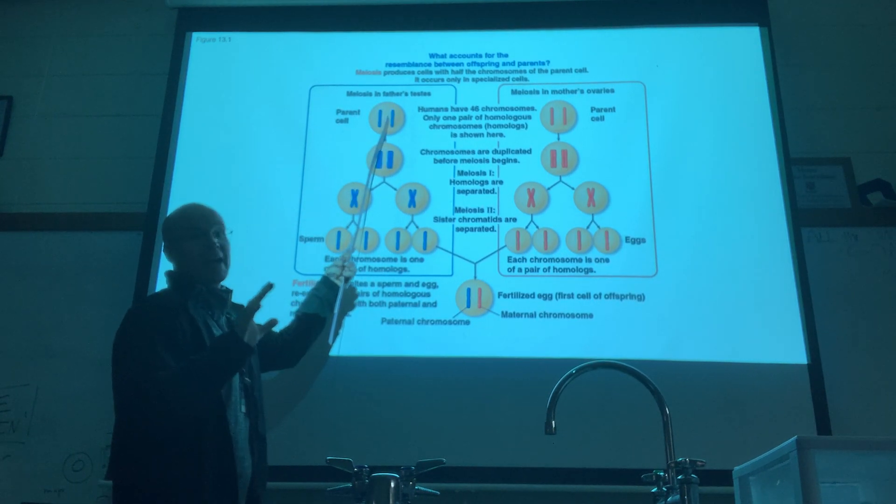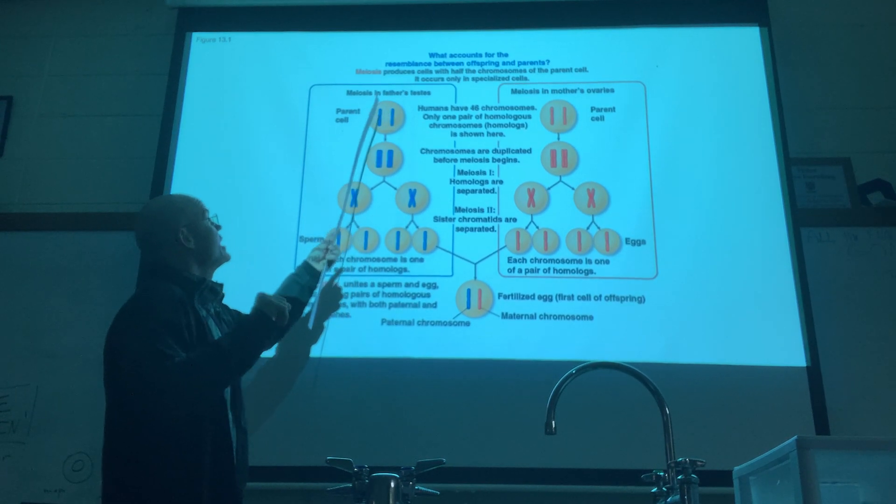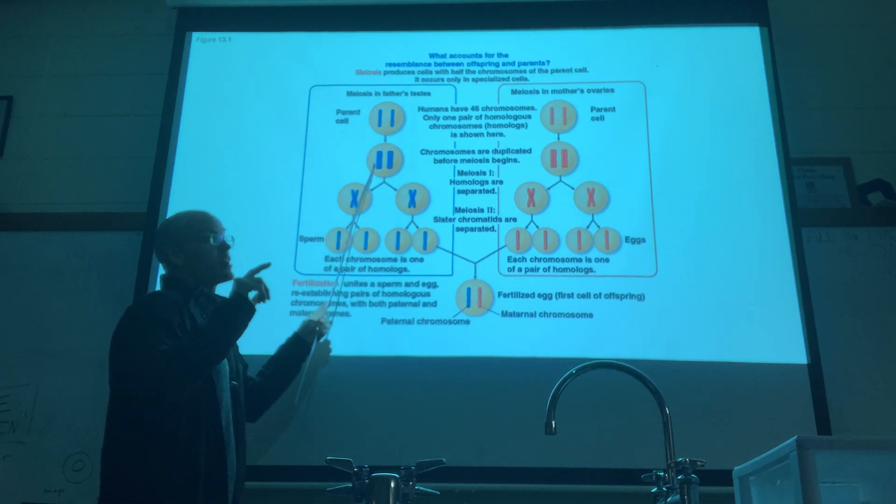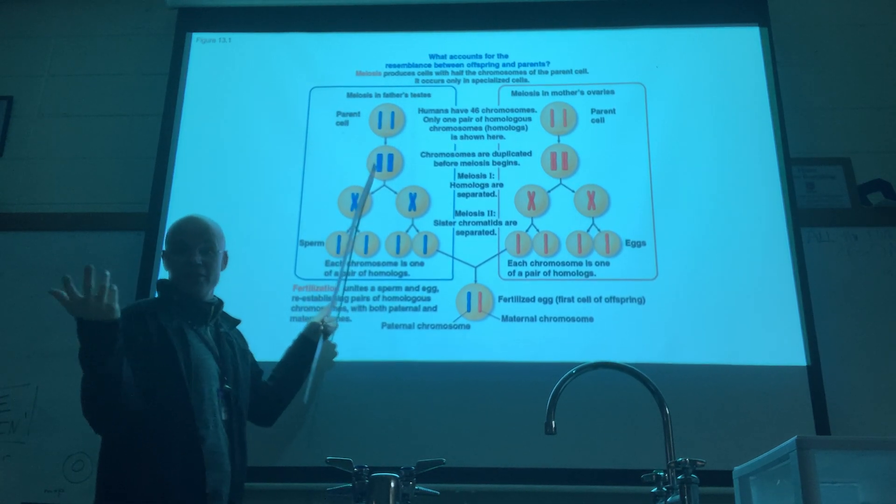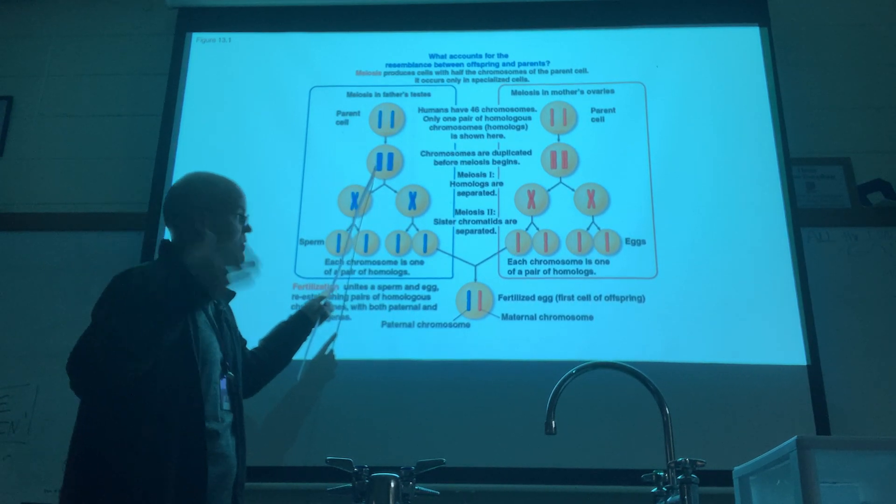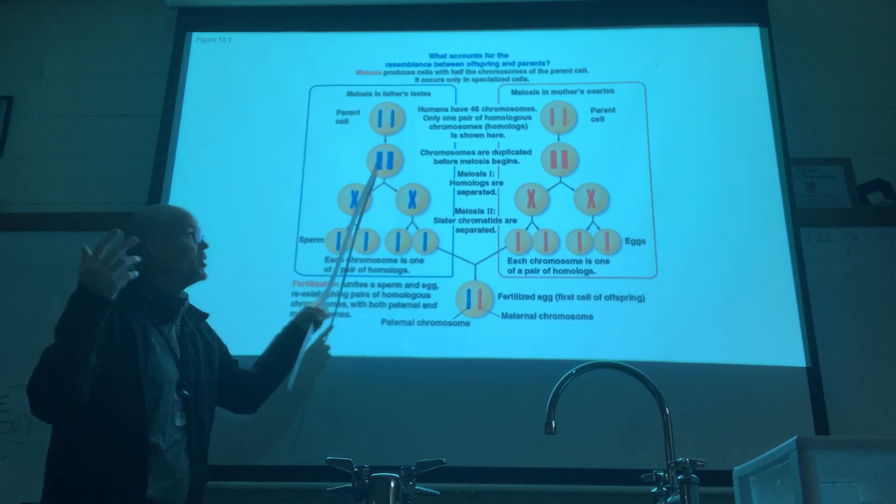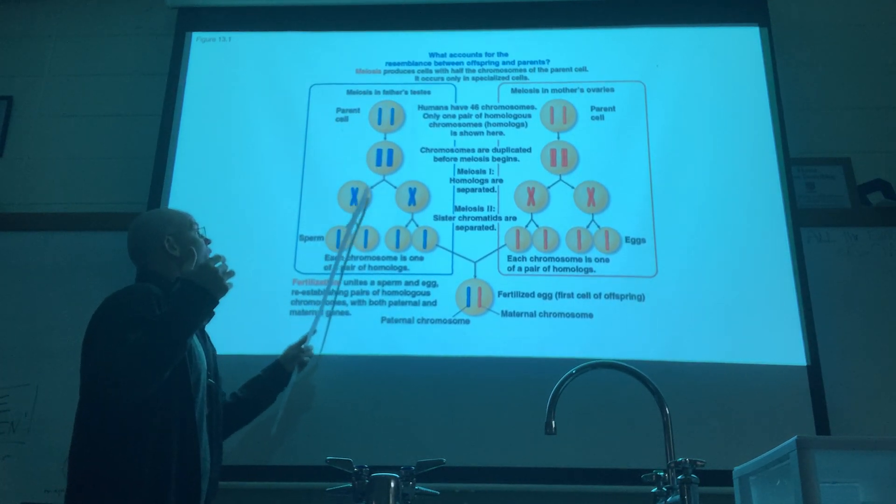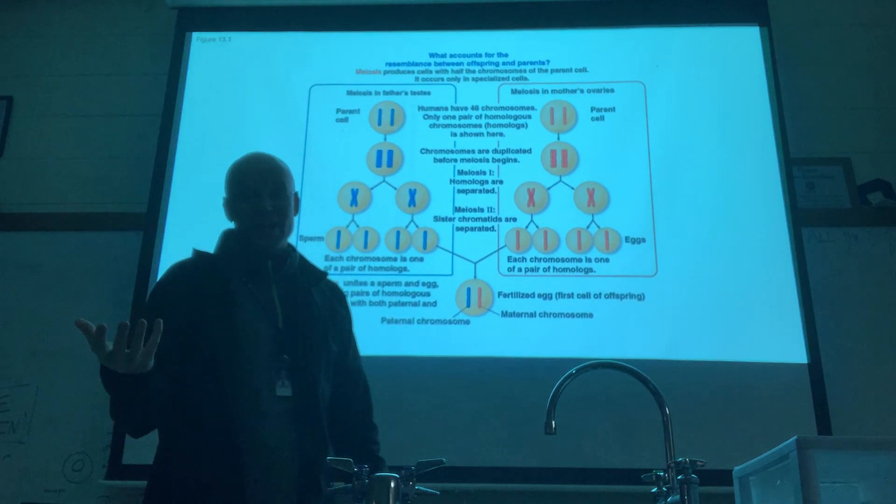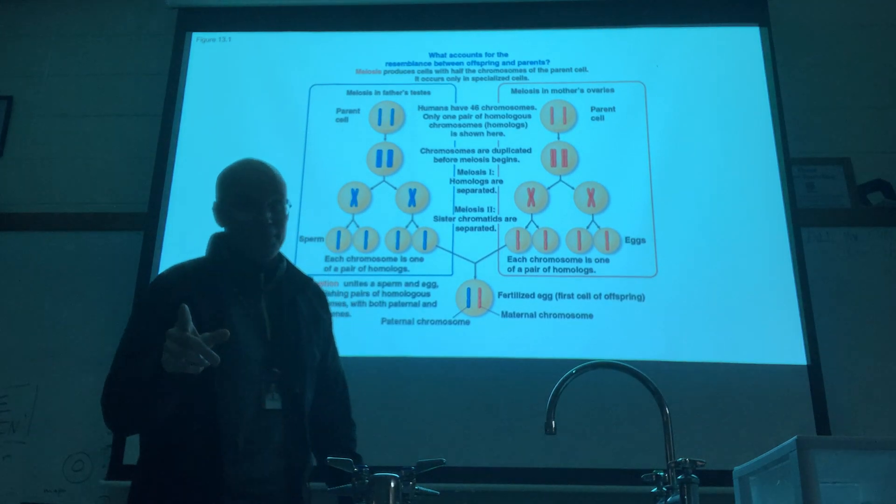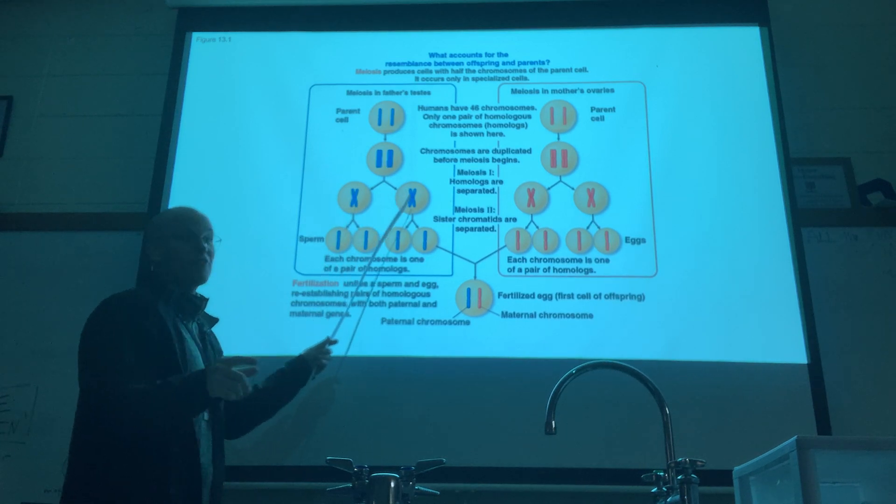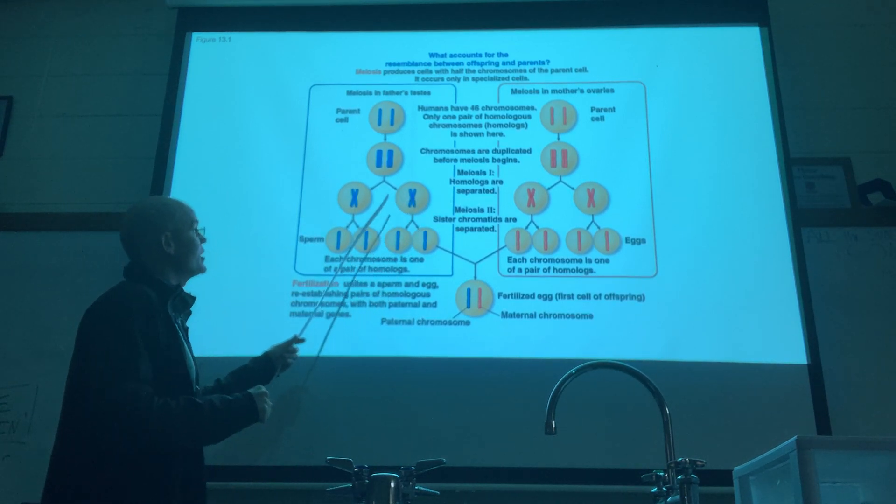What you find, and we're going to compare this to mitosis, is that you have a diploid cell which makes a copy of the chromosomes within that cell during the S phase of interphase. That cell will divide into two cells. That's just like mitosis. Except the division here is a little different than in mitosis. We'll talk about how it's different next class.